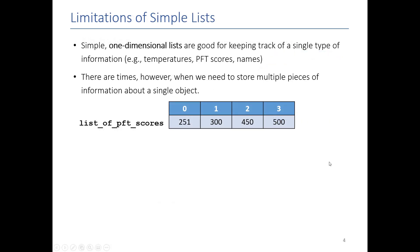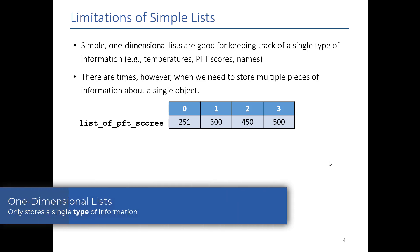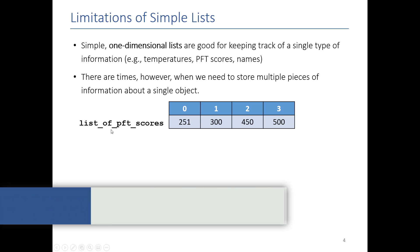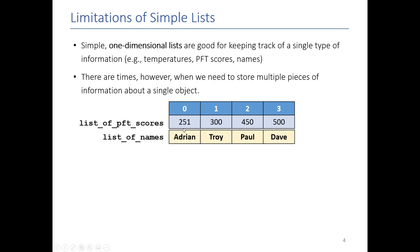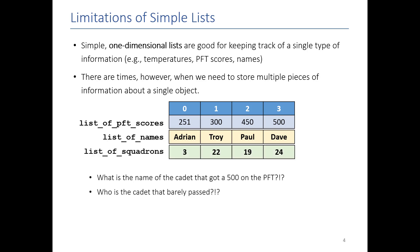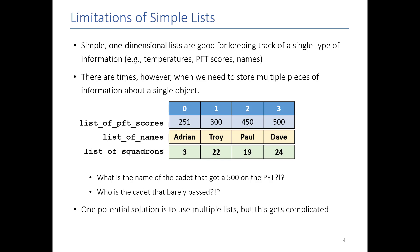The lists we've been talking about so far are one-dimensional — they contain a single type of information, like a list of PFT scores, swim scores, or airplane designators. But there are times when we want to know more than just one value. For example, it might be nice to know who got the 500, who got the 251 — their name, their squadron. A single one-dimensional list just isn't capable of holding multiple pieces of information.